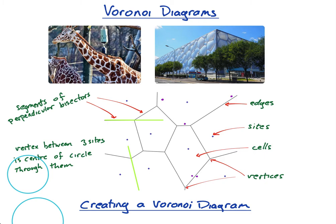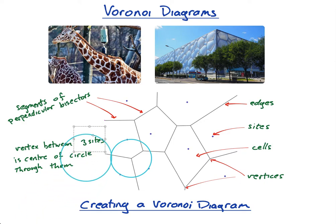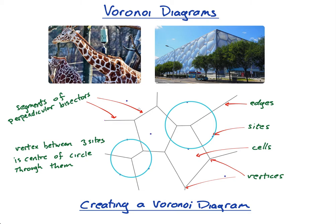Each vertex is actually the centre of a circle that passes through the three sites closest to it. Here I've picked a circle — this is my centre, and it goes through this point, this point, and this point. If I pick another vertex, there's another circle that goes through those three points with that vertex as its centre. If you had a set of compasses and put the pointy bit right on a vertex, you'd see that the circle passes through the three closest sites.